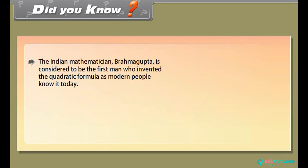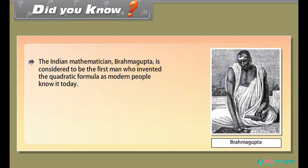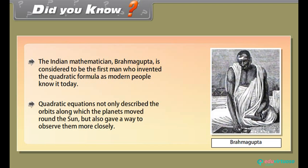Did you know? The Indian mathematician Brahmagupta is considered to be the first man who invented the quadratic formula as modern people know it today. Quadratic equations not only describe the orbits along which the planets moved around the sun, but also gave a way to observe them more closely.